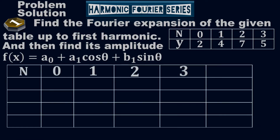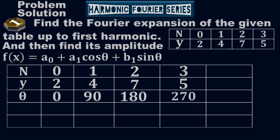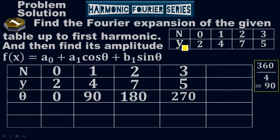According to the given table, the N points are 0, 1, 2, 3 and the Y values are 2, 4, 7, 5. We also need theta values because we have cosθ and sinθ in the formula. Theta has not been given in the table, so we need to find it.